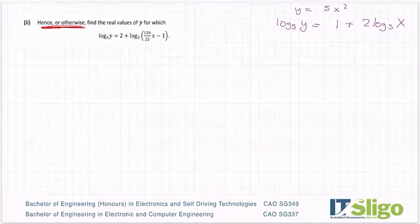So on the previous page I had Y was equal to 5X squared and I had log to the base 5 of Y was equal to 1 plus 2 log to the base 5 of X. So that's my hence and these should be able to help me solve this one. That's what that word is there for. There's another word otherwise, which means there's another way of solving it that doesn't involve the answers to the previous one.